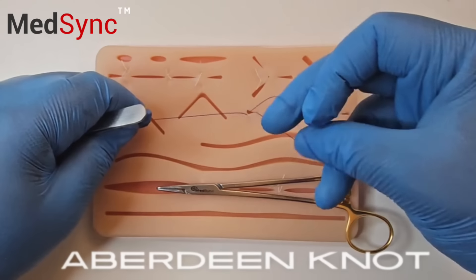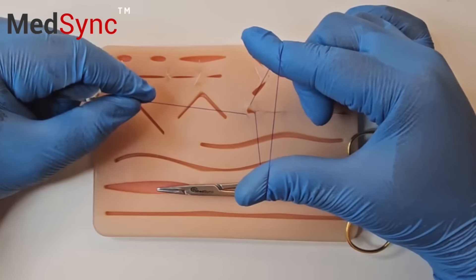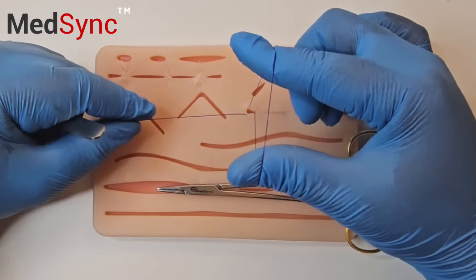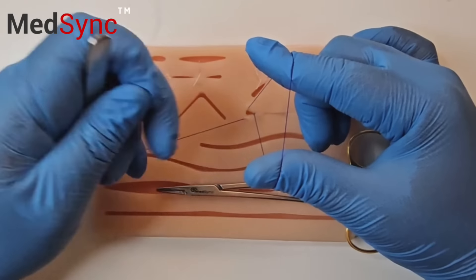The Aberdeen knot. This is a buried knot. You keep the loop over your thumb and index. You keep the needle on the opposite side.